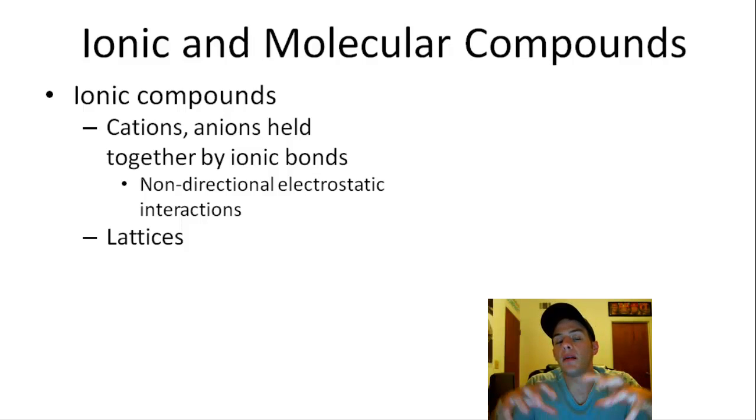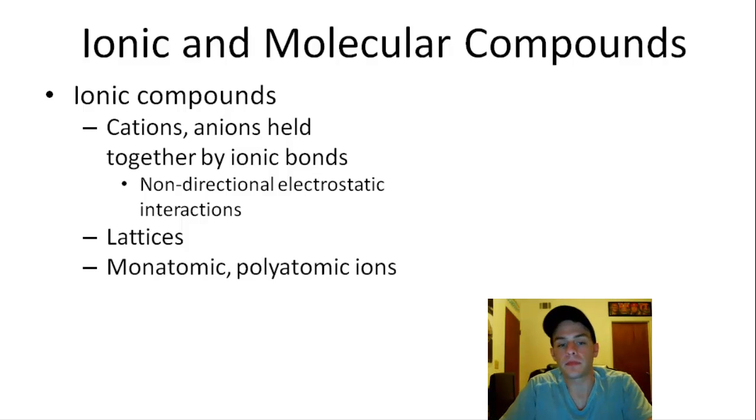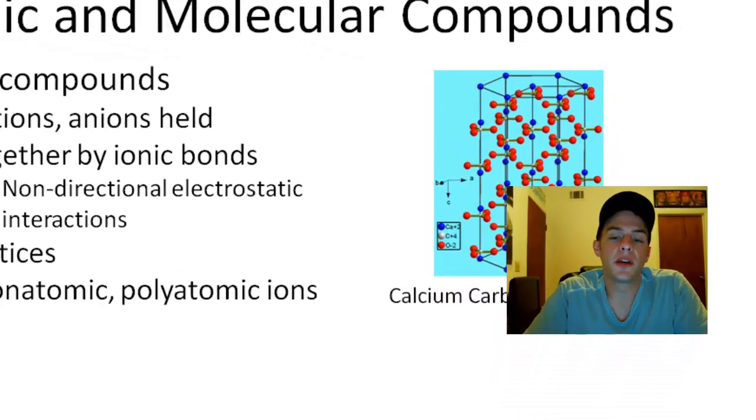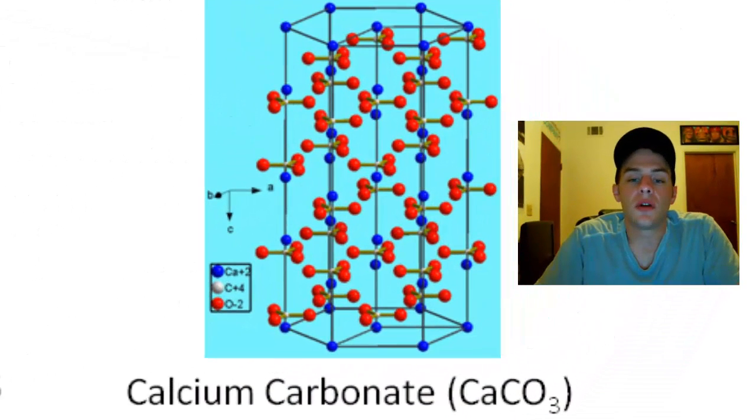So a lattice is a repeating three-dimensional array. It's sort of like a cage, if you will, of interlocking cations and anions arranged in a very specific way. And these ions could be monoatomic, which means that they have one atom. Or they could also be polyatomic ions. A polyatomic ion is basically like a molecule, but it has a charge.